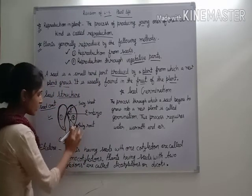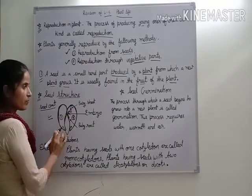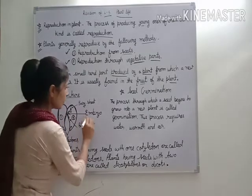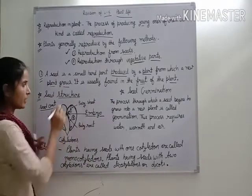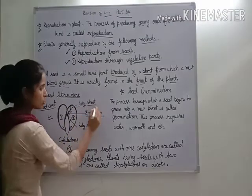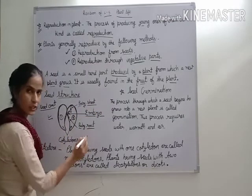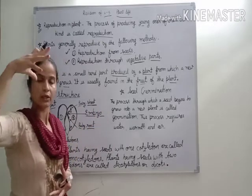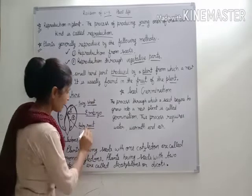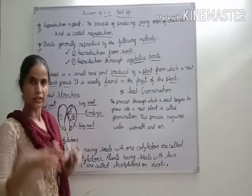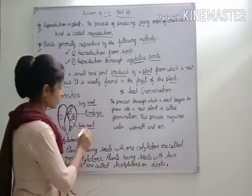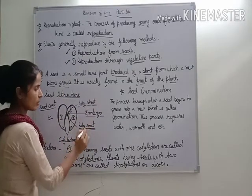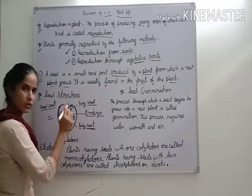Us seed coat ke andar ek chota plant hota hai jisko bolte hai embryo. Iske andar ek baby shoot hota hai aur ek baby root hota hai. Baby shoot jo plant ka jo part zameen ke upar grow karta hai usko shoot hota hai. Plant ke jo zameen ke niche grow karti hai woh root hoti hai. Is embryo ke andar baby shoot aur baby root hota hai.